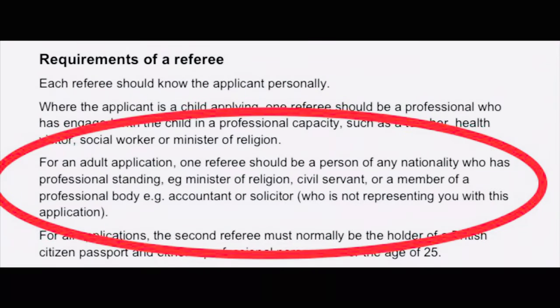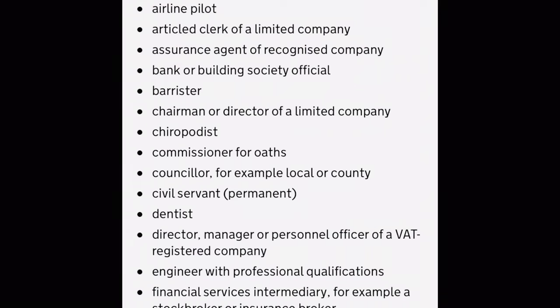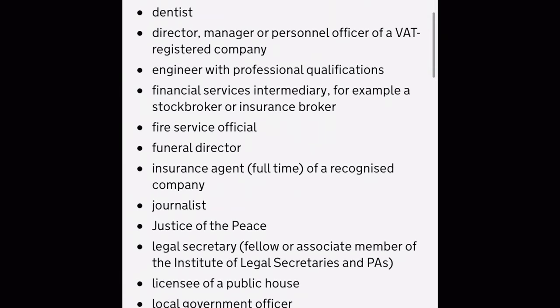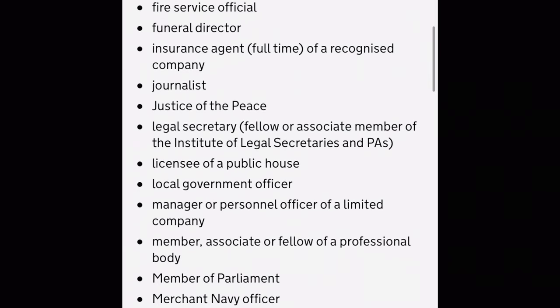So for a British citizenship application, we will need two referees who will confirm our identity. The first referee is a person of any nationality who has professional standing. The government website has provided a list of professional standing, and I will show it to you here. This is the most accurate list that I could find on the web — I always refer to the government website to make sure I have the updated and most accurate list.